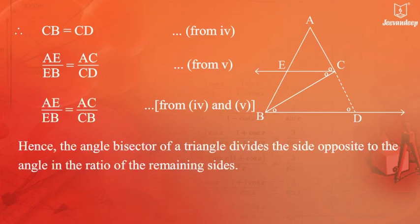Hence, the angle bisector of a triangle divides the side opposite to the angle in the ratio of the remaining sides.